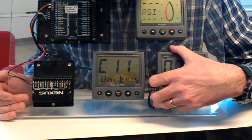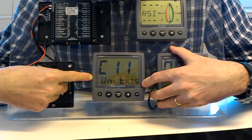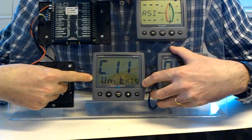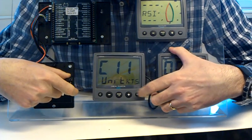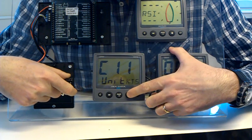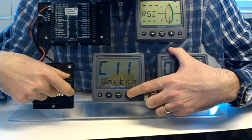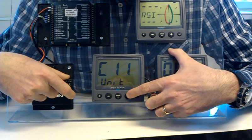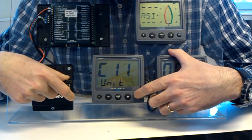I'm going to move it over to C11, and these are the speed units. And as you can see, we've got knots on at the moment. We can change that if we want very simply by a short press on set, and then by using plus and minus. The available options are kilometers per hour, miles per hour, or knots. And I'm happy with knots, so I'm going to confirm that with set.